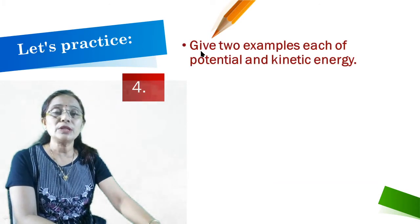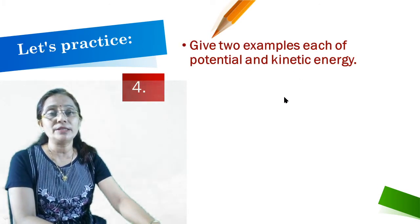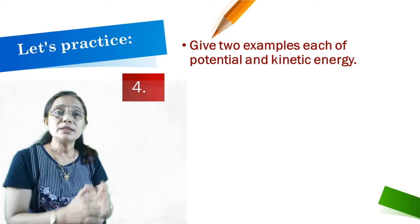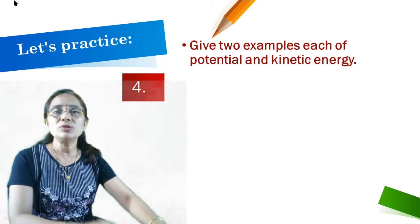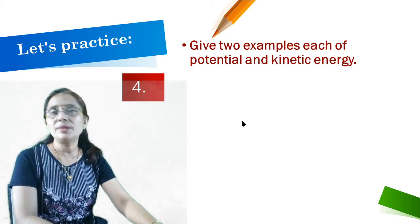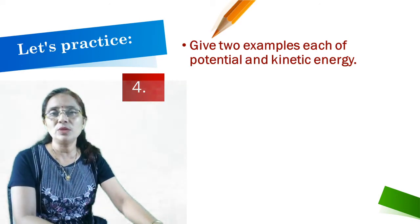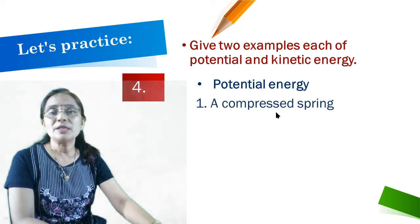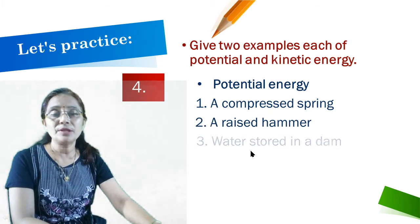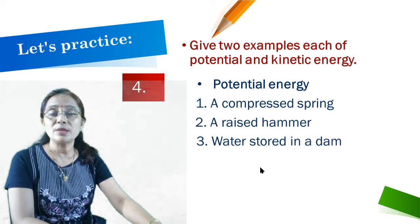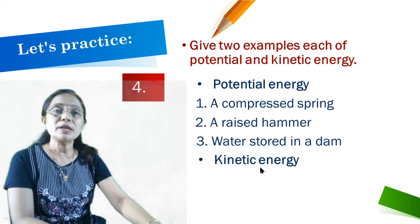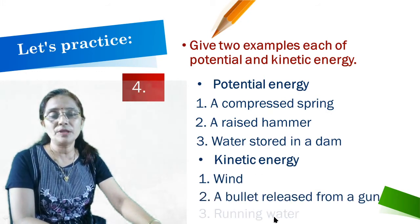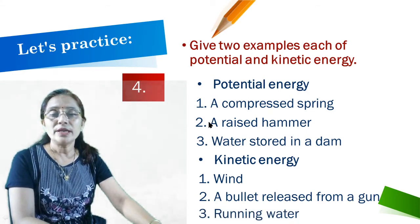Fourth question: give examples of potential energy and kinetic energy. Examples of potential energy: a compressed spring, a raised hammer, water stored in a dam. Examples of kinetic energy: wind, a bullet released from a gun, running water. You can use your own examples as well.